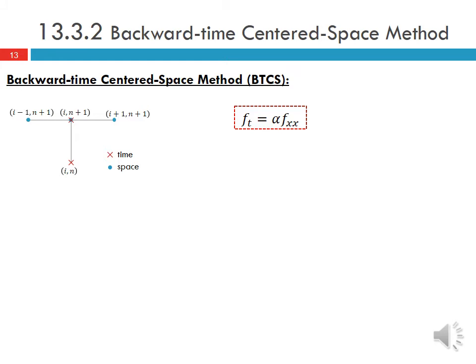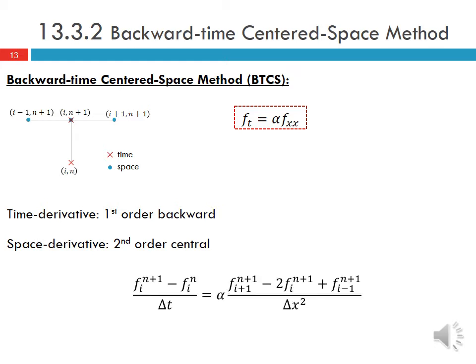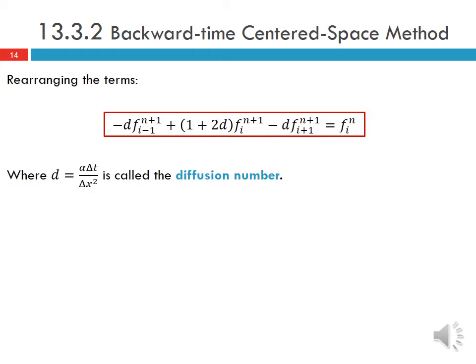The next method to consider is the Backward Time Centered Space method, or BTCS. In this case the stencil is as shown here. We use a first order backward method for the time derivative and second order central for the space derivative. F_I at N+1 is dependent on F_I at N, as well as the neighboring grid points F_{I-1} and F_{I+1} at time level N+1. Rearranging the terms gives the expression shown here, where D is equal to alpha*delta_T over delta_X squared, the diffusion number.